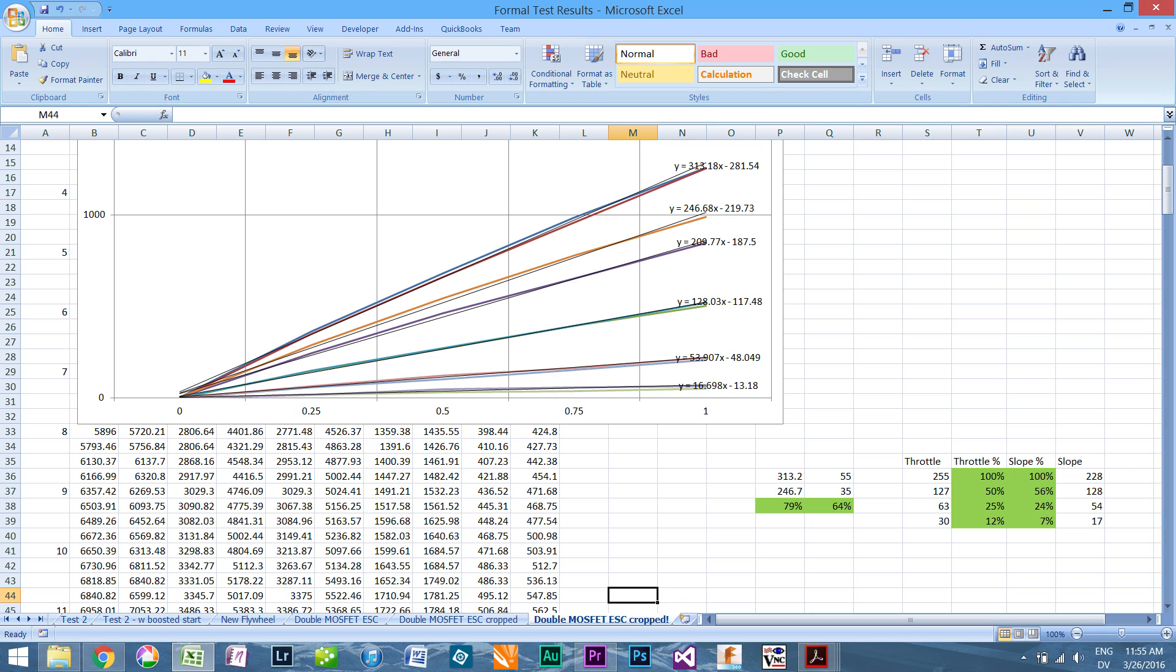So that top line is a 55-turn, all the ones below are the 35-turn. For the 35-turn, a throttle of 255 equals a slope of 228, so 100% throttle equals 100% slope. I'm trying to figure out, for the percentage of throttle I put in, what percentage of full throttle output I get. So 50% throttle gives you 56% of the torque, which is pretty linear.